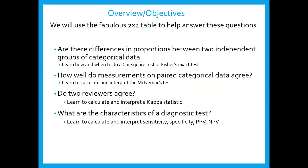We'll also look at how you do measurements on paired categorical data — how do they agree — and for this we'll use McNemar's test. Do two reviewers agree? I'm going to show examples of two pathologists who read the same specimen, and you want to determine if they're diagnosing disease to the same degree. We'll use a kappa statistic for that. And if we have time, we'll get through to the characteristics of a diagnostic test: sensitivity, specificity, and the predictive values.